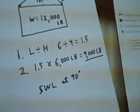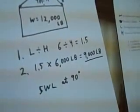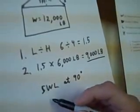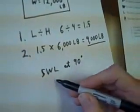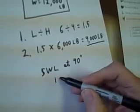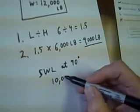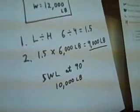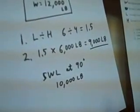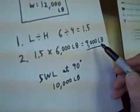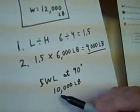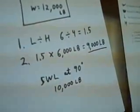So in our case, 9,000 pounds, if the safe working load at 90 degrees was 10,000 pounds, this would be a safe lift, because the force is not more than the rating of the safe working load.